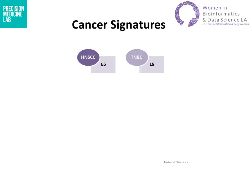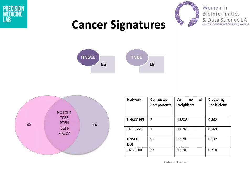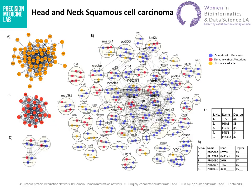In this study, we identified 65 candidate genes for head and neck squamous cell carcinoma and 19 genes for triple negative breast cancer, out of which 5 genes were common. We constructed protein-protein interaction and domain-domain interaction networks for both head and neck squamous cell carcinoma and triple negative breast cancer. In the case of head and neck squamous cell carcinoma, we identified top 5 HUB proteins: TP53, HRAS, EGFR, PIK3CA, and P10. These proteins are also part of the highly connected cluster shown in figure C.